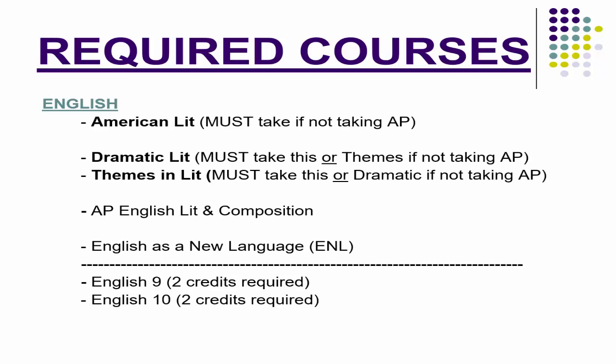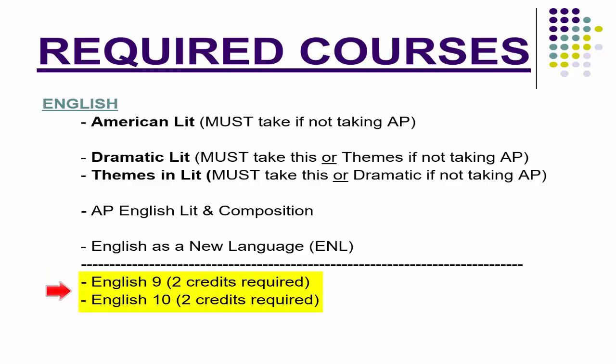Required courses: English. Look at your course selection sheet. You have to take American Lit if you're not taking AP junior year. Then you can choose between Dramatic Lit or Themes in Lit if you're not taking AP. There's also AP Lit and Composition, and English as a New Language. Remember, you need two credits in English 9 and two credits for English 10. If your graduation check sheet doesn't show those credits, sign up to retake them in summer school or junior year.